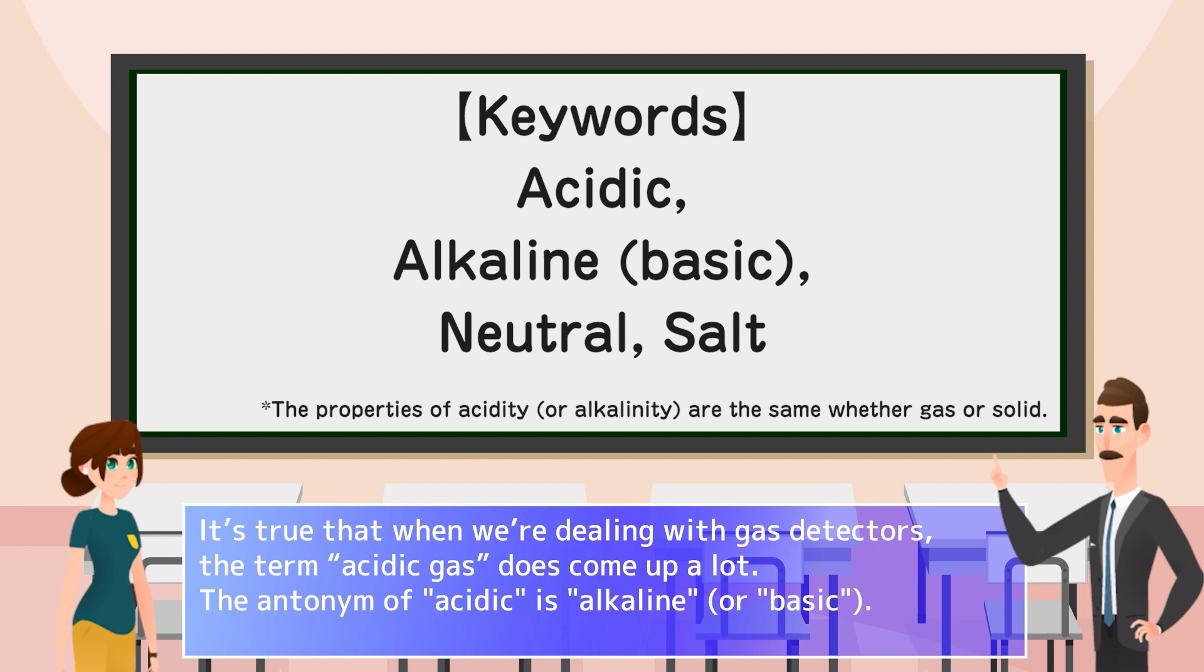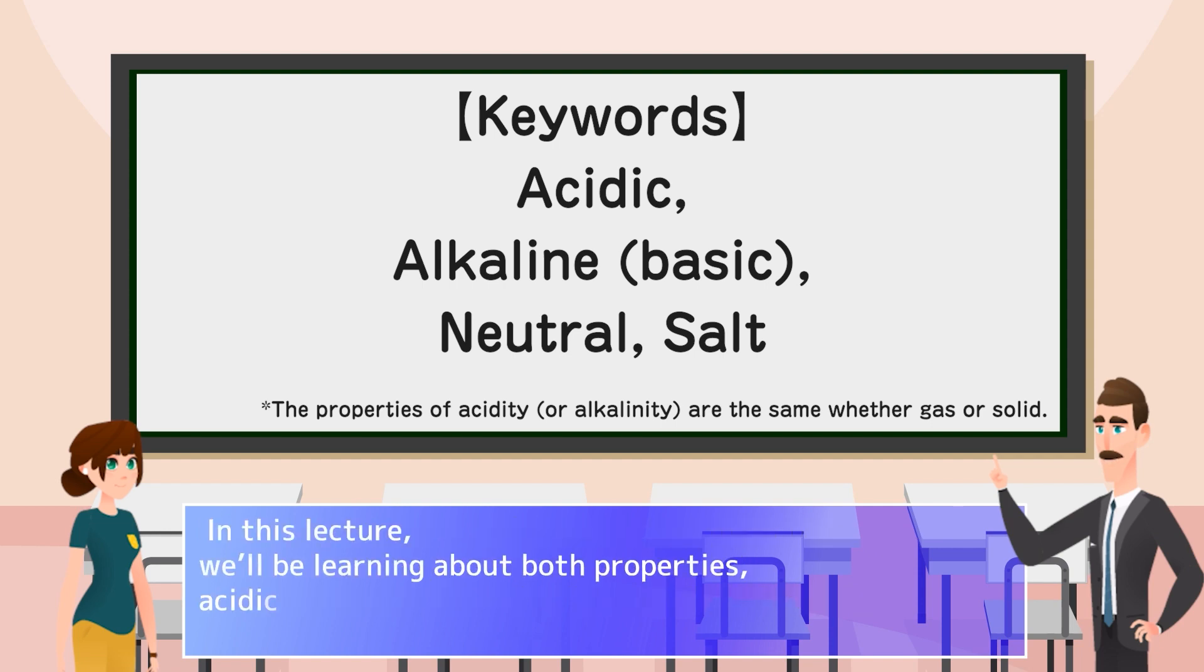The antonym of acidic is alkaline or basic. In this lecture, we'll be learning about both properties, acidic and alkaline.